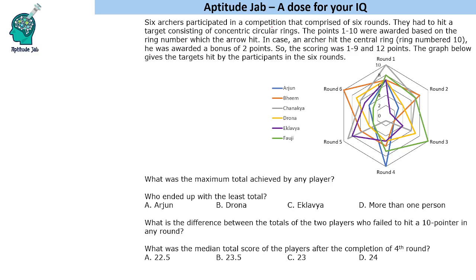If an archer hits the central ring, that is number 10, that person would be given a bonus of 2 points. So the scoring is basically 1 to 9 and then 12 points. There is no 10 points. If the archer hits the central one, he will get 12 points. This graph gives the targets hit by the participants in the six rounds. Wherever we have 10, we will count it as 12.